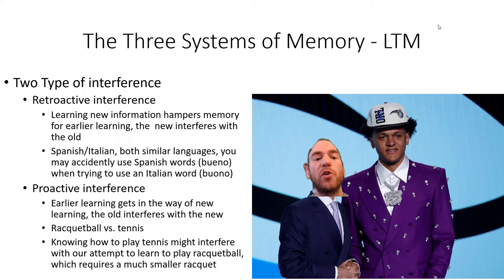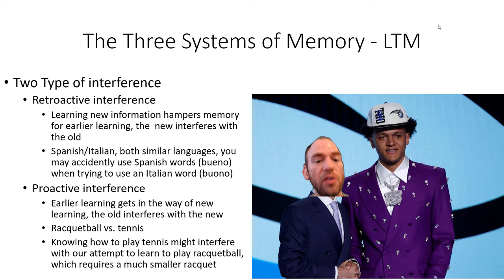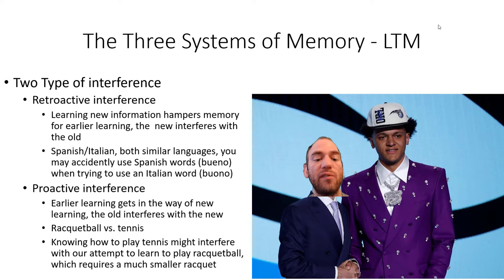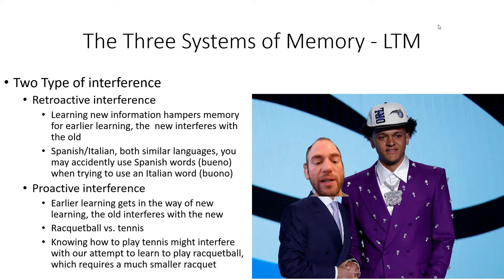There's retroactive interference — learning new information hampers memory for earlier learning; the new interferes with the old. For example, Spanish and Italian are similar languages, so you may accidentally use Spanish words when trying to speak Italian. Versus proactive interference — earlier learning gets in the way of new learning; the old interferes with the new. For example, knowing how to play tennis might interfere with learning racquetball, which requires a much smaller racket.